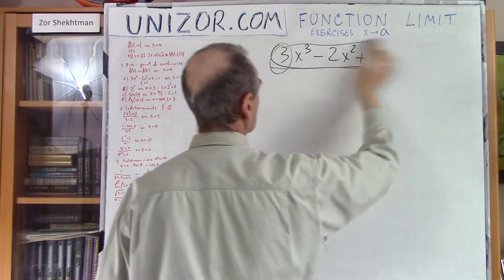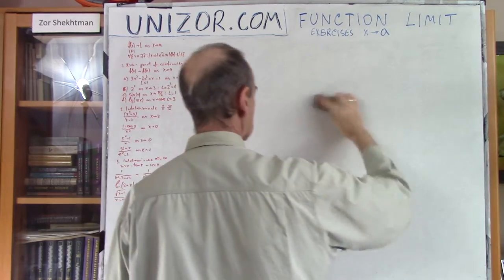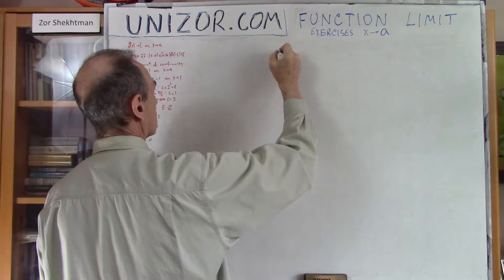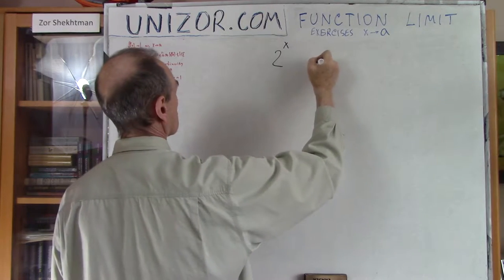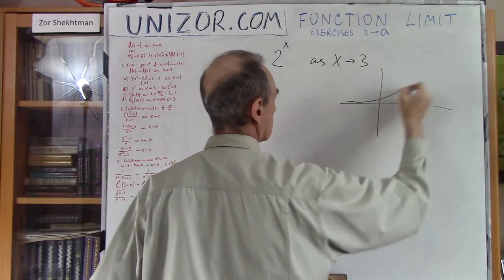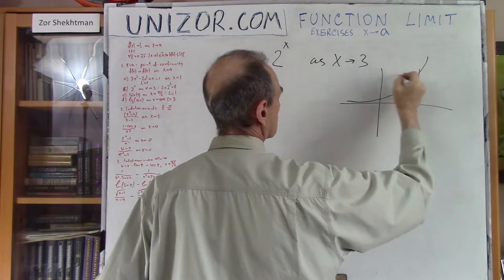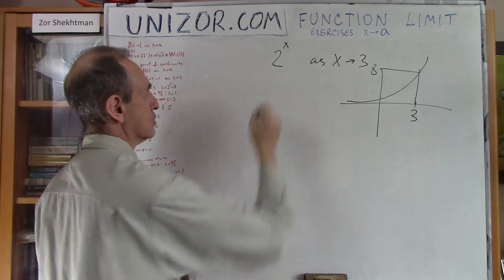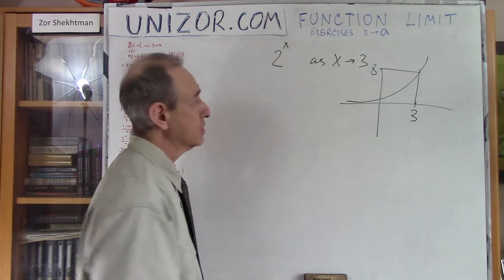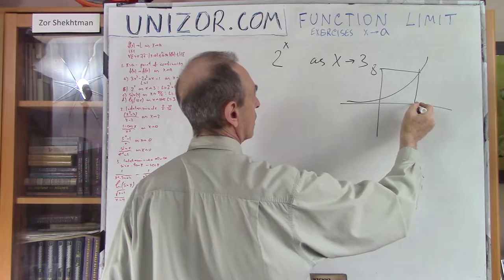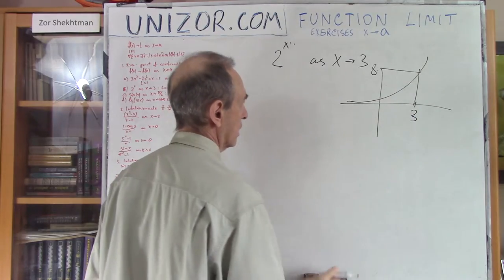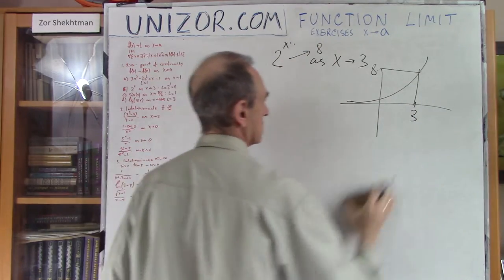Another example of the same kind — where you can substitute the limit value of the argument directly — is 2^x as x goes to 3. All exponential functions are continuous, so you can just use the limit value of the argument and substitute it: 2 to the third degree is 8. So this function goes to 8.